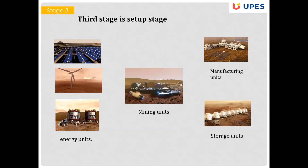The third stage includes setting up different units: energy units, mining units, storage units, and manufacturing units. We can produce power on Mars from three processes: solar, wind, and nuclear energy production. Mining units are used to extract ores and convert them into raw materials for further production, with different processes depending on the type of resource. Then we have the storage and production units.